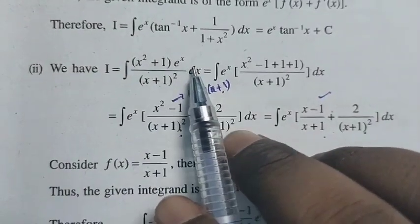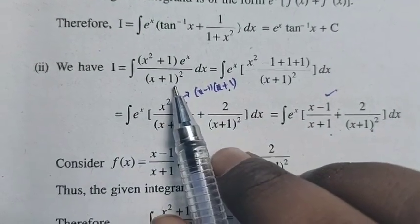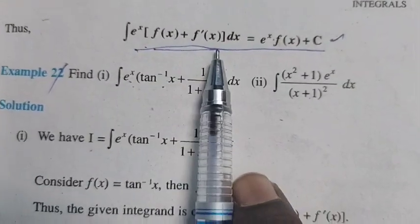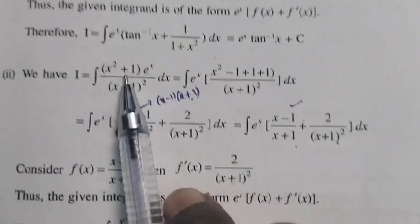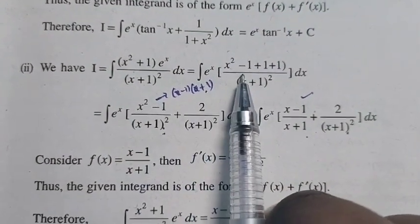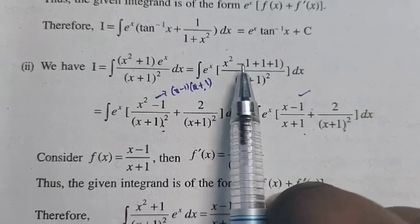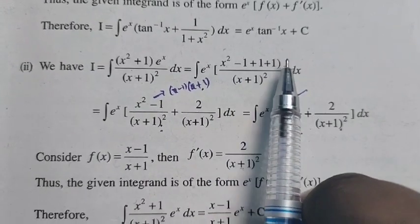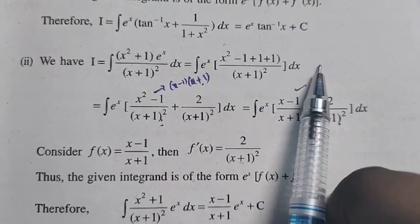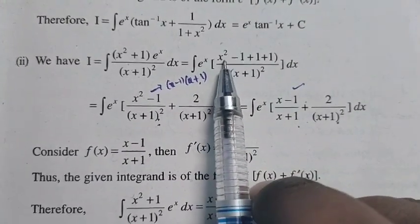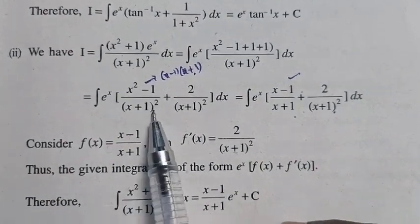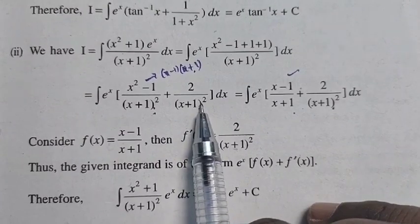Similarly, Integration of [(x² + 1)·e^x] / (x + 1)² dx. Our formula is e^x · [f(x) + f'(x)]. In the numerator, adding and subtracting: x² + 1 = x² − 1 + 2. Splitting: (x² − 1)/(x + 1)² + 2/(x + 1)².